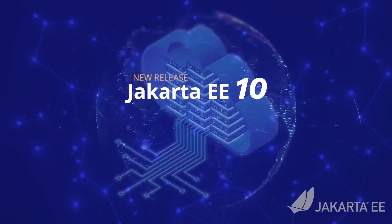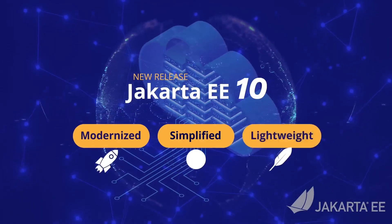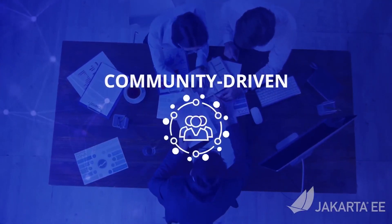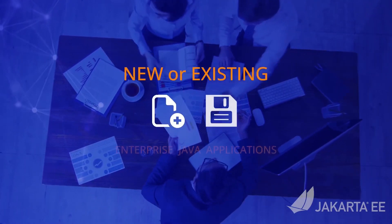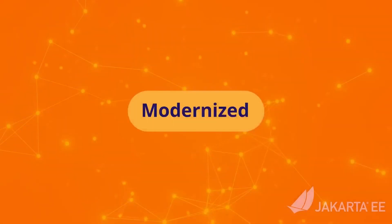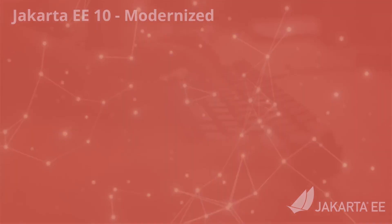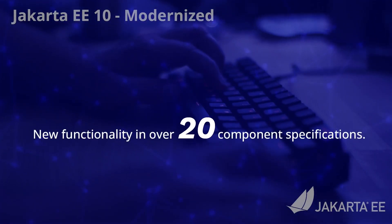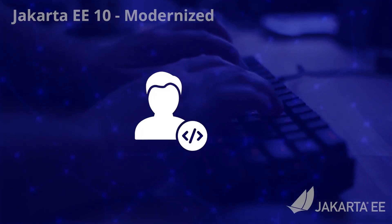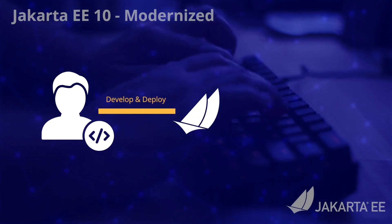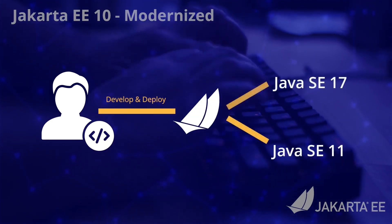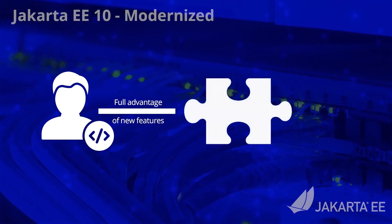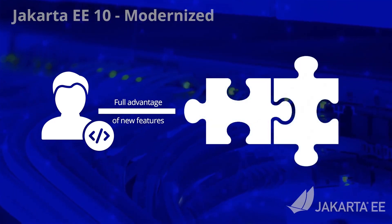Jakarta EE10 includes new features for building modernized, simplified, and lightweight cloud-native Java applications. This community-driven innovation release is designed for organizations looking to start developing new or advancing existing enterprise Java applications. The Jakarta EE10 release provides new functionality in over 20 component specifications. This release enables builders of modern cloud-native Java applications to develop and deploy on Java SE11 as well as Java SE17, allowing developers to take full advantage of new features including the modular system introduced in Java SE9.